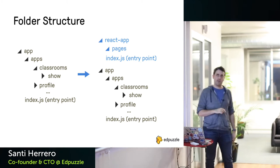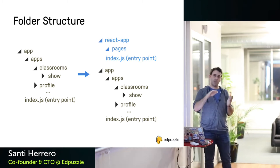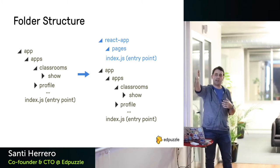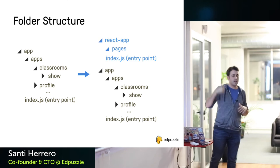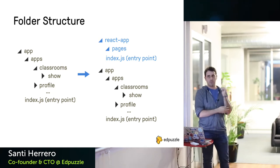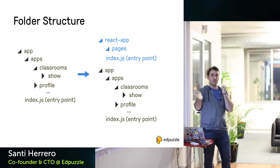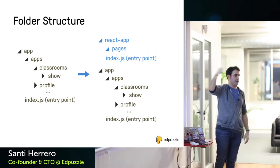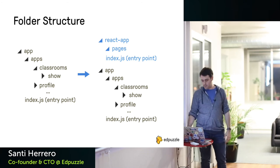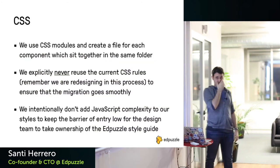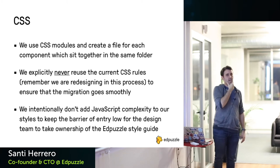We also changed our wording: instead of 'subapps,' designers think about 'pages,' so let's call them pages. It's much more obvious when talking to designers — 'subapps classroom show' sounds like CRUD which designers don't use. And the benefit of this folder structure is that when you're done migrating, you just delete the old Backbone app folder and the migration is complete.